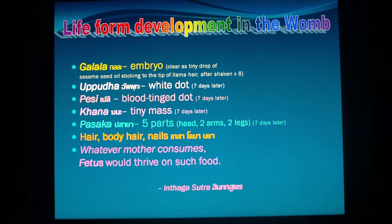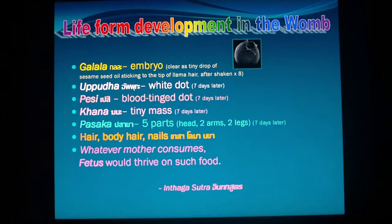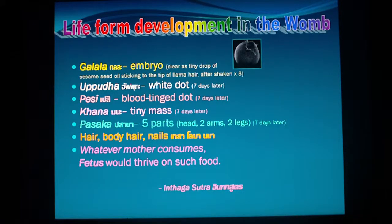The Buddha described life-form development in the womb as follows. It starts with Kalala, the fertilized egg, as you saw previously. It is a tiny dot — smaller than a sesame seed or a point on the tip of a llama hair. You have to check it at least eight times; it is that tiny, basically microscopic.